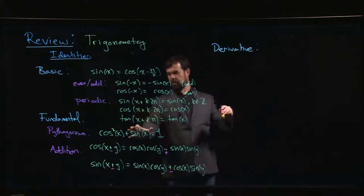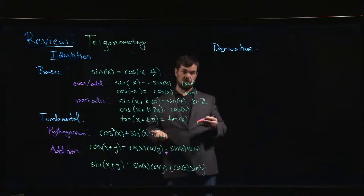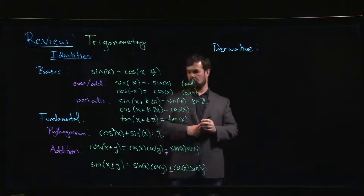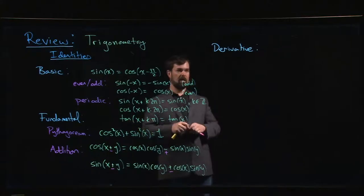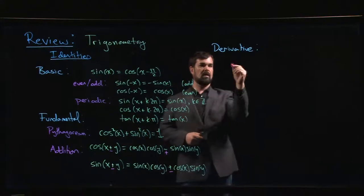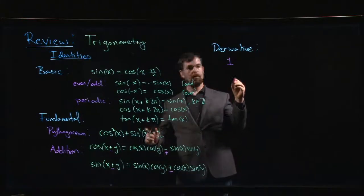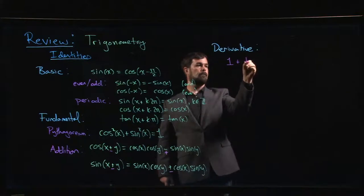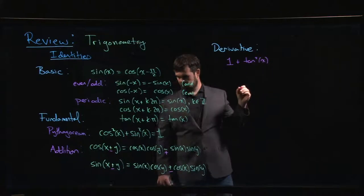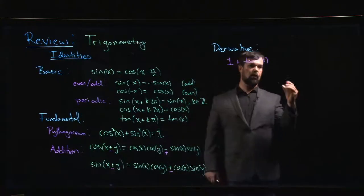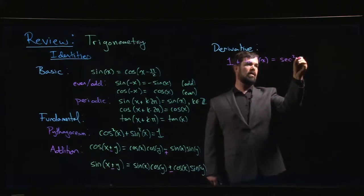So some of the ones that you're going to run into are the ones that are derived from the Pythagorean identity that give you relationships between the other trig functions. So if you take the Pythagorean identity and you divide everything by cosine, you get, well, cos squared over cos squared, you'll get 1. Sine squared over cos squared, you get tan squared, okay? And then 1 over cos squared, well, 1 over cos is secant, so you get secant squared x.